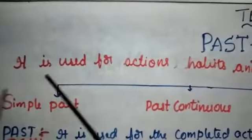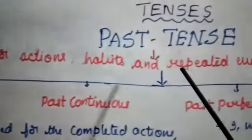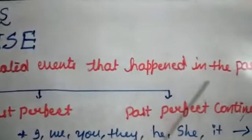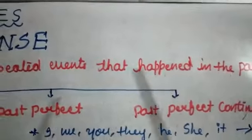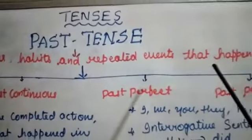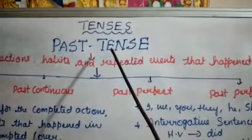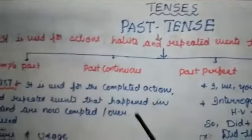What is past tense? Past tense is used for actions, habits, and repeated events that happened in the past. That is called past tense. This past tense is further divided into four kinds.